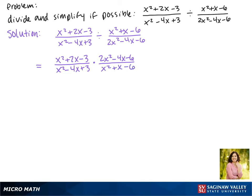Now we can factor the trinomials. On the top, that x squared plus 2x minus 3, the factors of negative 3 that make 2 are negative 1 and positive 3. In the denominator, the factors of 3 that make negative 4 are negative 3 and negative 1.